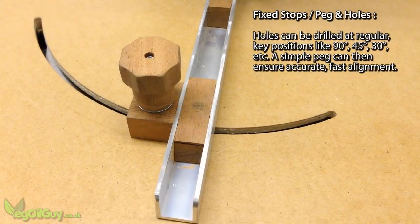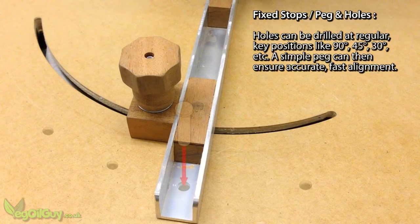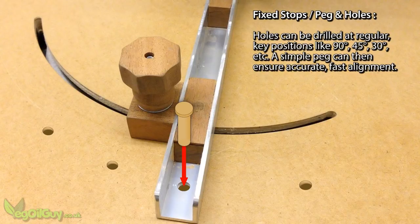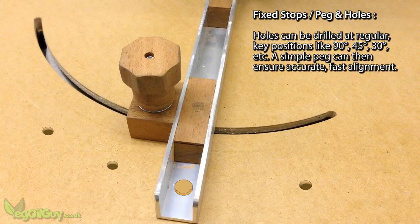Once I have the accuracy, I may add a couple of guide holes for quick stops, like 90 degrees, 45 and 30. A hole and peg arrangement will make precise alignment quick and easy.